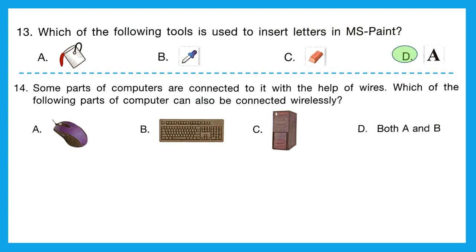Question 14: some parts of computers are connected with wires — which can also be connected wirelessly? We have seen mouse with and without wire, and keyboard with and without wire. But UPS can only be used with a wire. So both A (mouse) and B (keyboard) are correct options, and for that we have option D, both A and B.